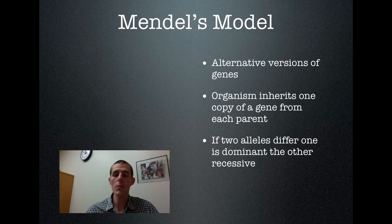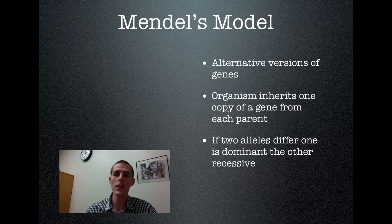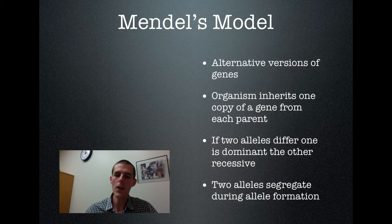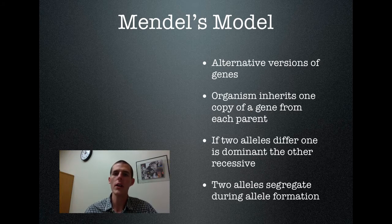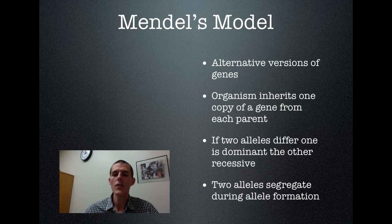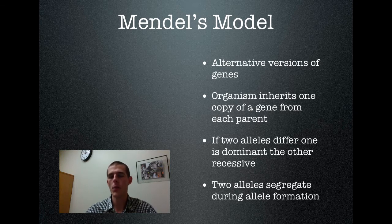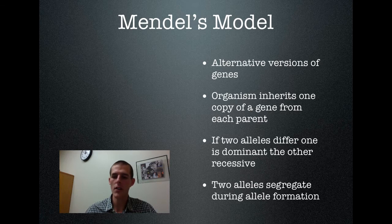So if you get two copies of a purple gene, your plant is purple; two copies of white, it's white. But if you get a purple and a white, and purple is dominant to white, then your plant is going to be purple. The final piece is that two alleles segregate during gamete formation. When the organism is forming gametes — sperm or eggs — the alleles separate from each other. If the organism has one allele for white flowers and one for purple, half the gametes will get the white allele and half will get the purple allele. That is Mendel's law of segregation.